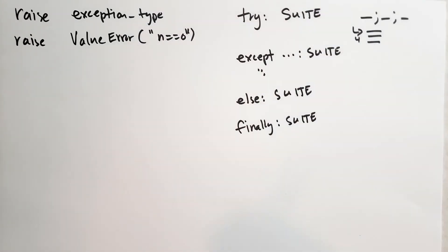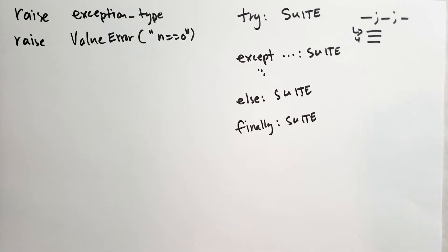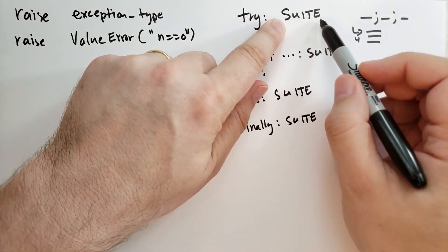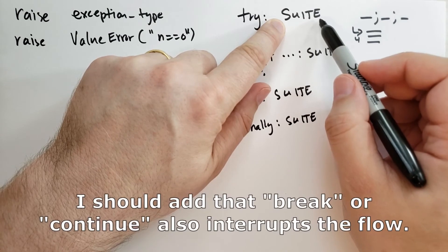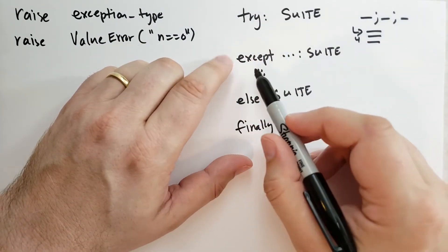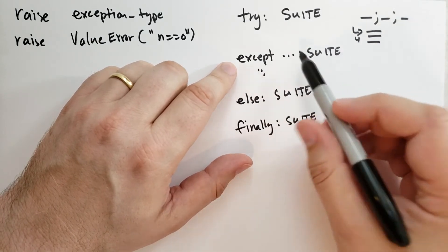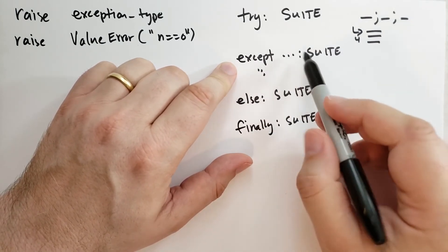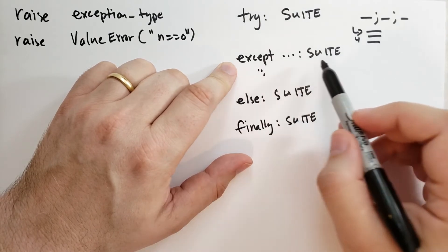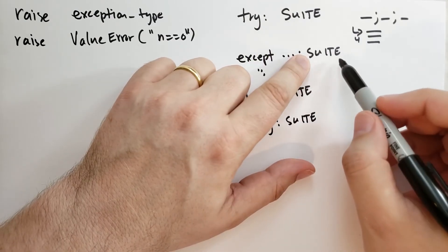I'm going to briefly cover what the try statement does. First, the try statement runs the suite until either an exception is raised, a return statement is hit, or the code completes. If an exception is raised and there's one or more except blocks, then it compares the exception with the except blocks until it finds one that matches. If it finds one that matches, it runs that suite.